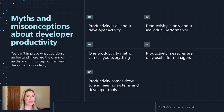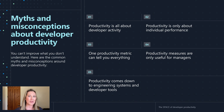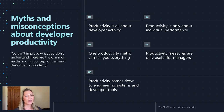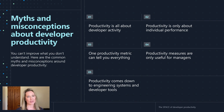First, productivity is just all about developer activity — numbers, counts, lines of code, number of commits. No. Number two, productivity is only about individual performance. We know that's not true. It really is a team sport, but again, we'll talk about that.